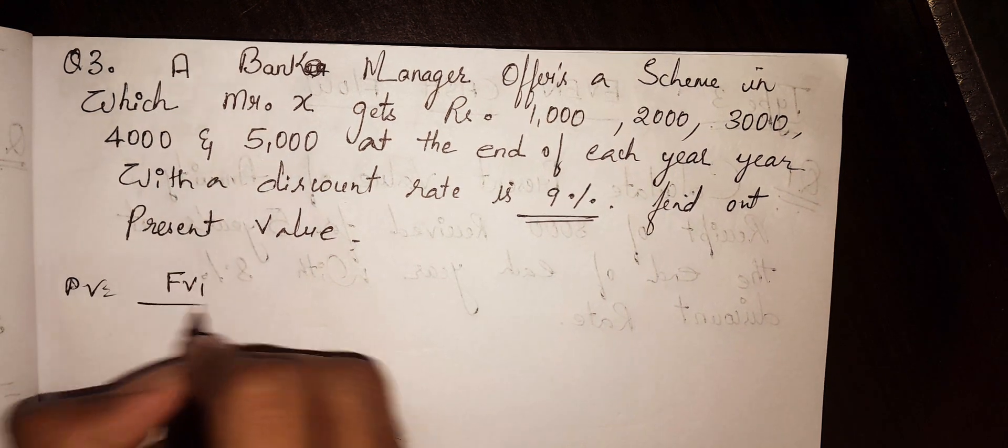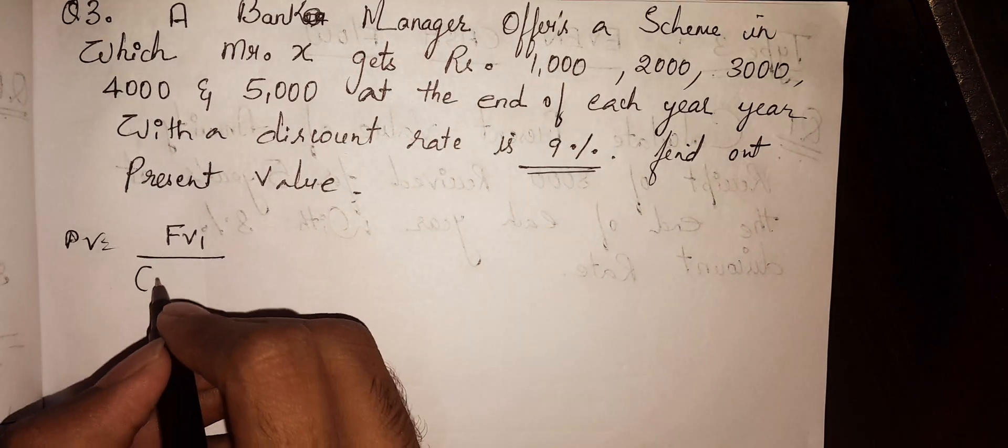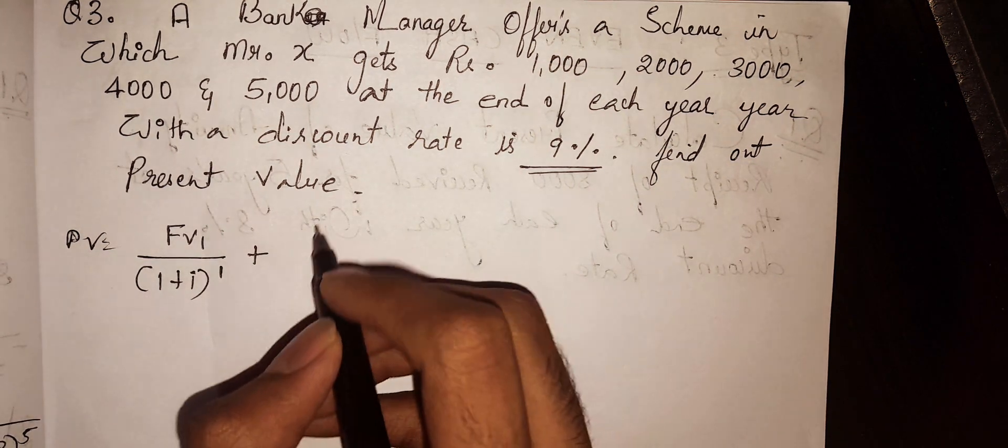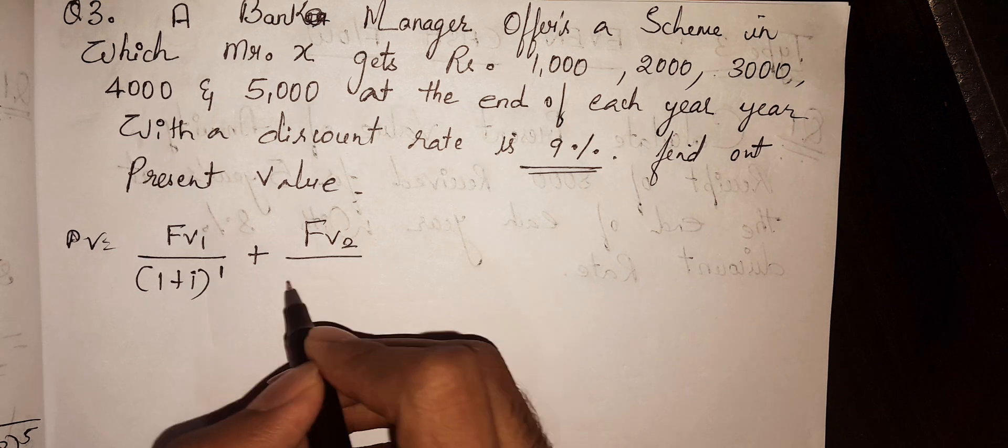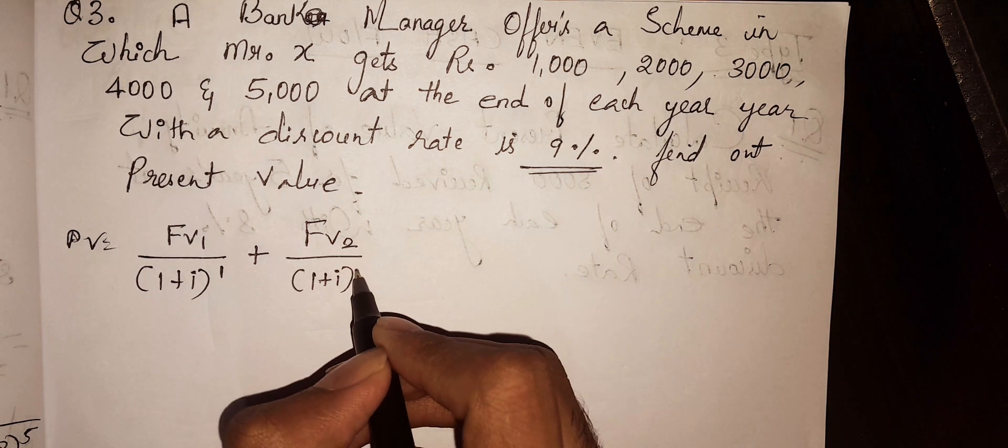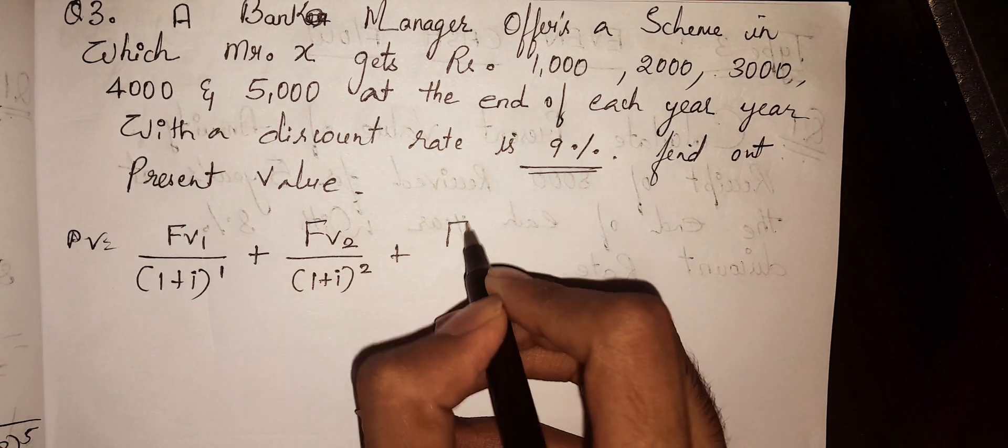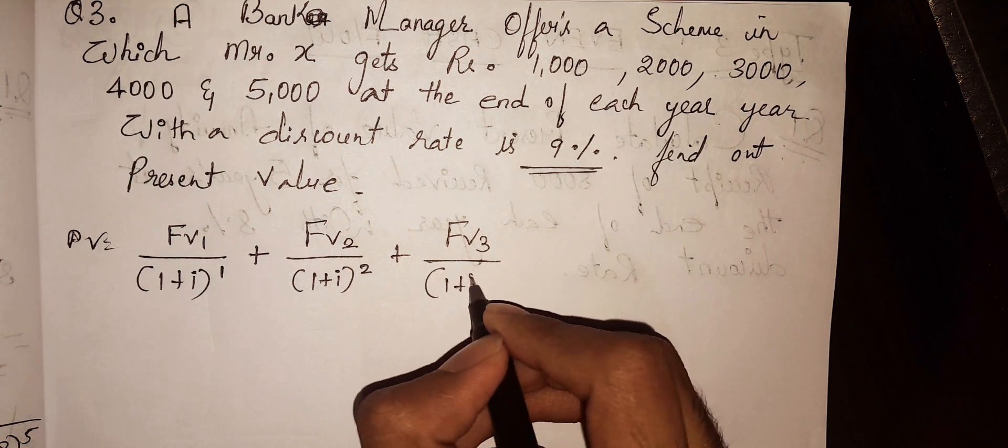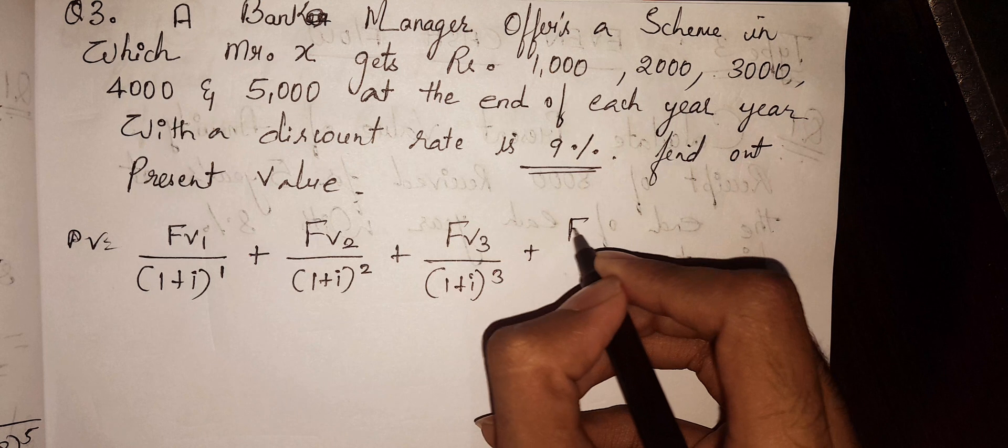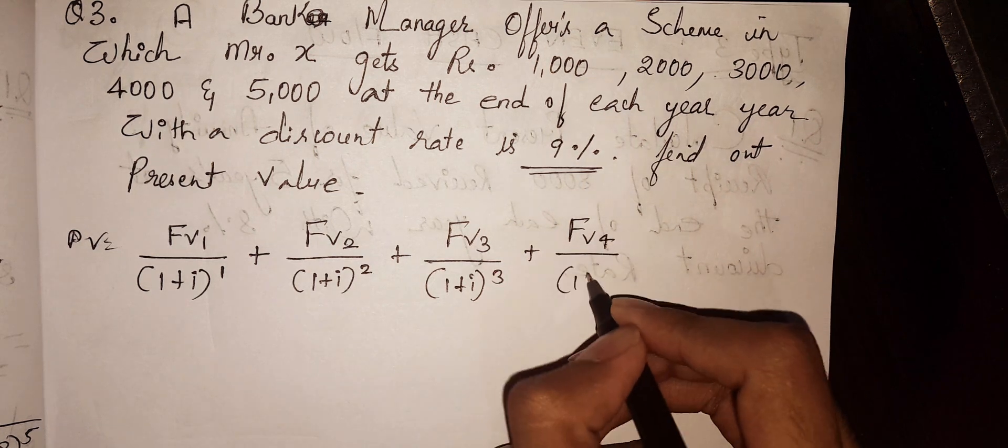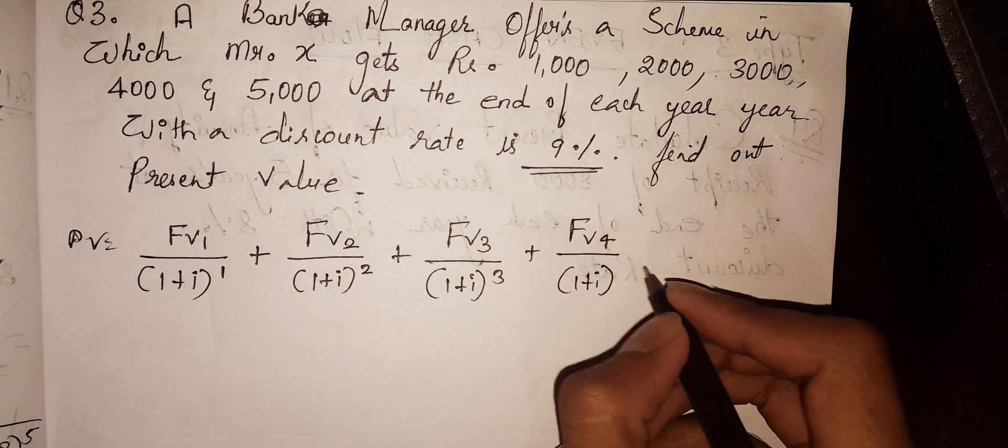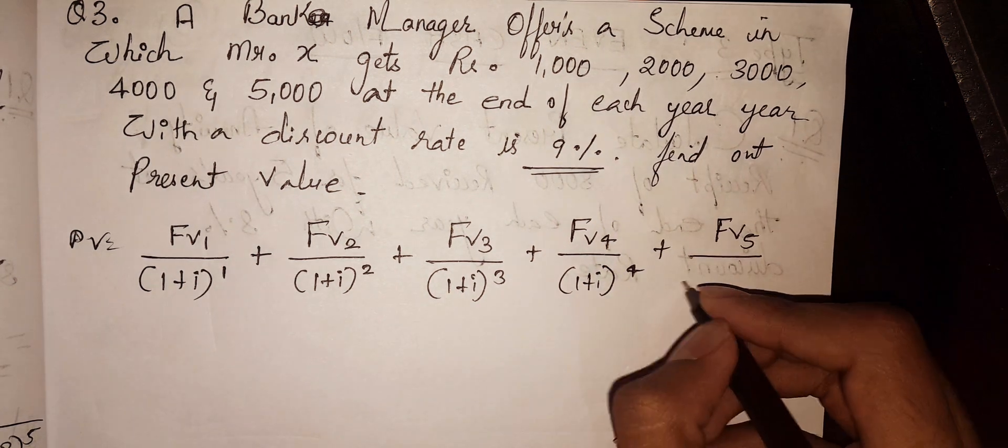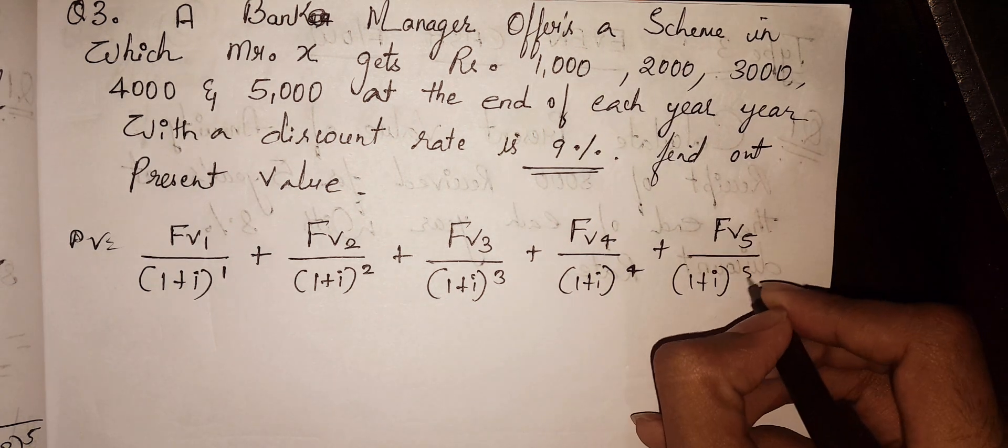So the formula to find out present value is: future value of 1st year divided by (1 + i) to the power of 1, plus future value of 2nd year divided by (1 + i) to the power of 2, plus future value of 3rd year divided by (1 + i) to the power of 3, plus future value of 4th year divided by (1 + i) to the power of 4, plus future value of 5th year divided by (1 + i) to the power of 5.